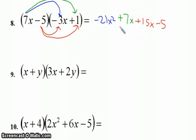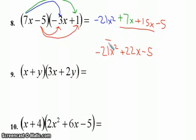So every one of these examples so far, I've done my four multiplications and looked to combine like terms. Keep the negative 21x squared the same. In the middle, combine those for a 22x, and the minus five doesn't change.